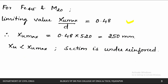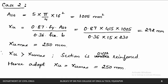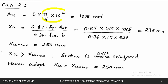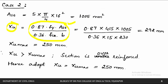For the second part, instead of 4 bars of 16 mm diameter, we now have 5 bars. Only the area changes: AST = π/4 × 16² × 5 = 1005 mm². Calculating the neutral axis depth with the same formula, only AST changes to 1005, giving XU = 292 mm.